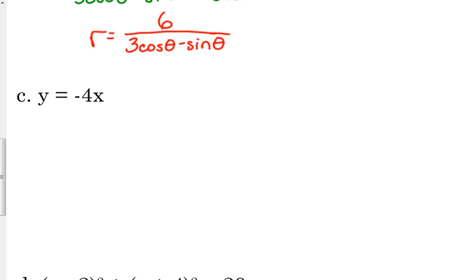All right, so there are actually two ways that we can go about this one. I'm going to show you both ways. The first way is just to start by replacing the y and the x with r sine of theta and r cosine of theta, respectively.